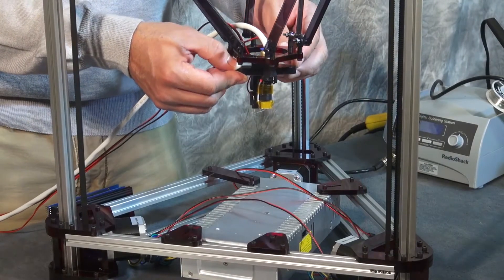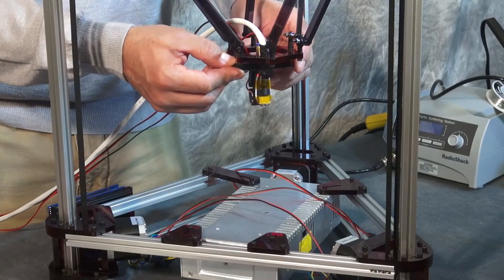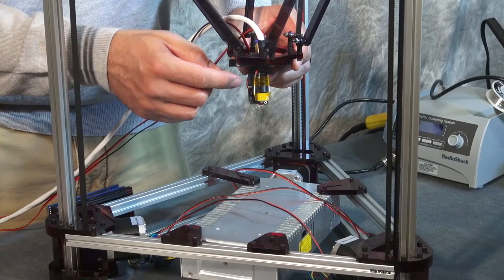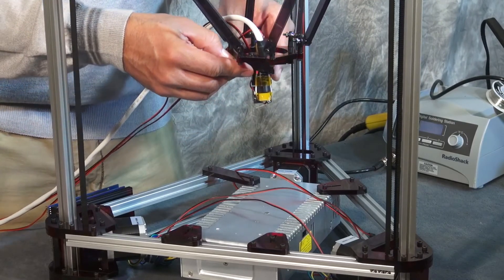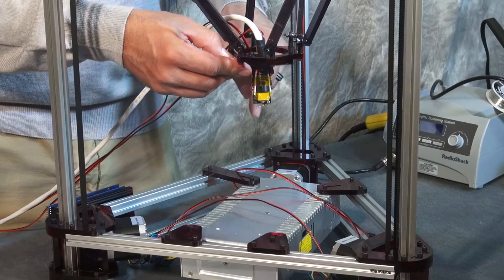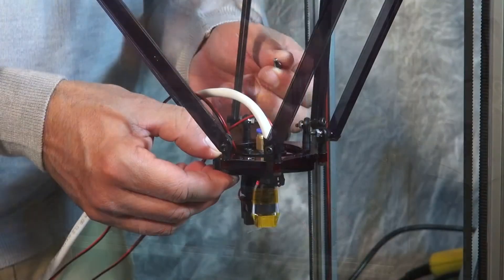When you're going to install this to the arm mount, you want to be sure that your hot end is pointing towards the front end of your printer and that your sensor mount is pointing towards the back right side of your printer. To mount this,